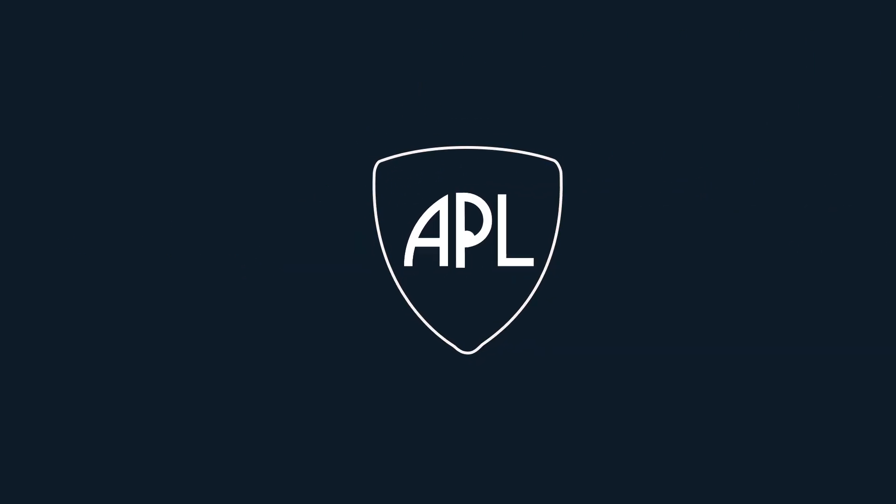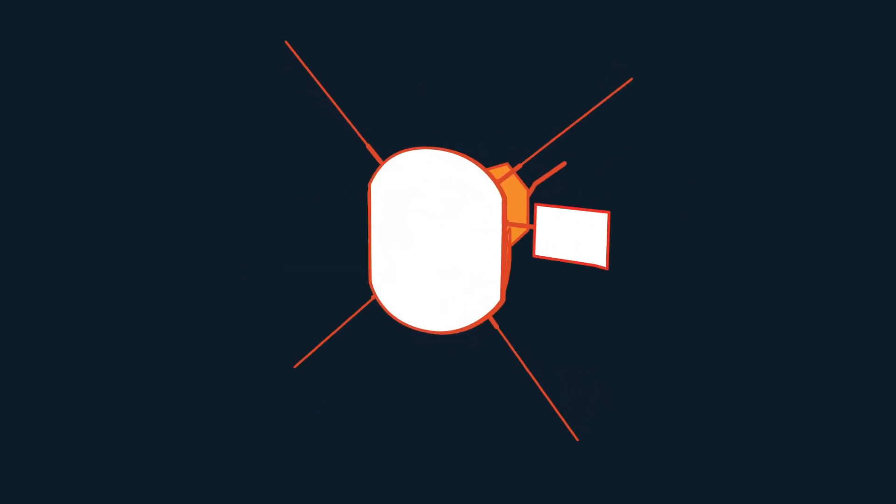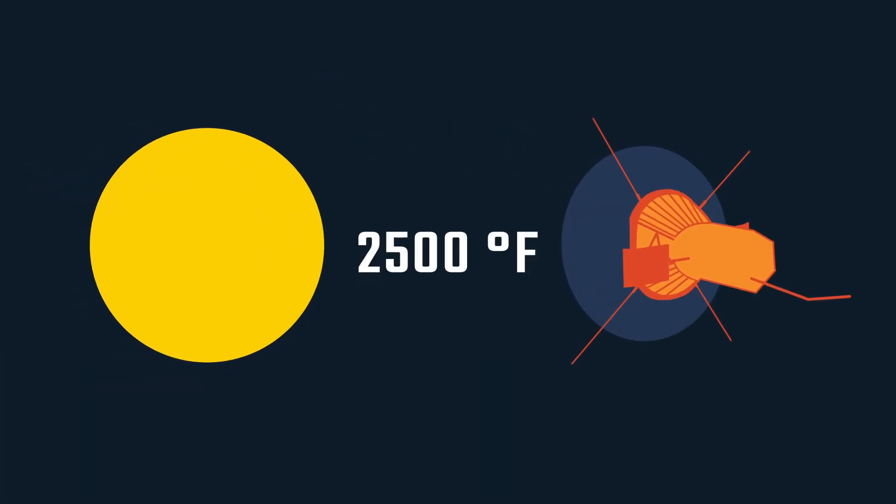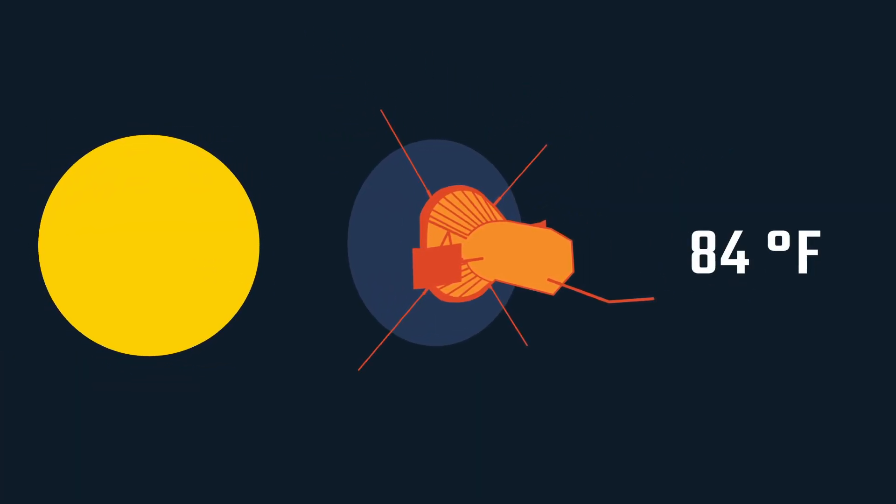Designed at Johns Hopkins APL, the heat shield shades Parker Solar Probe's critical systems on the outside, keeping them operating near room temperature, about 84 degrees Fahrenheit.